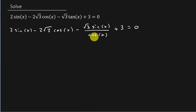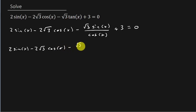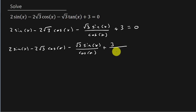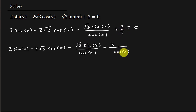The next thing I might do is take these last two terms and combine them together. So I've got 2 sine x minus 2 square root of 3 cosine x, minus square root of 3 sine x over cosine x plus 3 over cosine x. That's my common denominator. And obviously since that denominator is cosine x, this one stays square root of 3 sine x. But this one — that's 3 over 1 — so I've got to multiply 3 by cosine x.